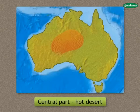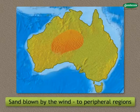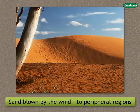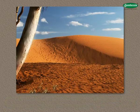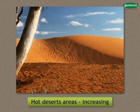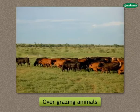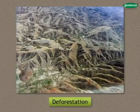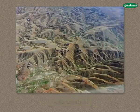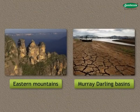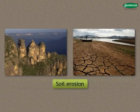3. The central part is a hot desert and the sand from these deserts is blown by the wind to the peripheral regions and deposited there. As a result, the areas of hot deserts are increasing. 4. Due to overgrazing of animals and deforestation on a large scale, the areas of eastern mountains and Murray-Darling basins are facing severe problems of soil erosion.